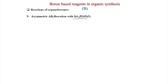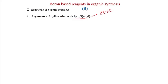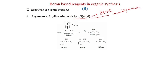The most popular isopinocamphyl IPC2B allyl reagent was developed by Brown and is commercially available. Treating this reagent with an aldehyde in pentane at 5°C for 5 to 30 minutes, followed by oxidation with H2O2/OH⁻, gives a secondary homoallylic alcohol. The reaction is quite general: aromatic aldehydes give 94% ee, ortho-bromo derivatives give 92% ee, and aliphatic aldehydes also give 92% ee.